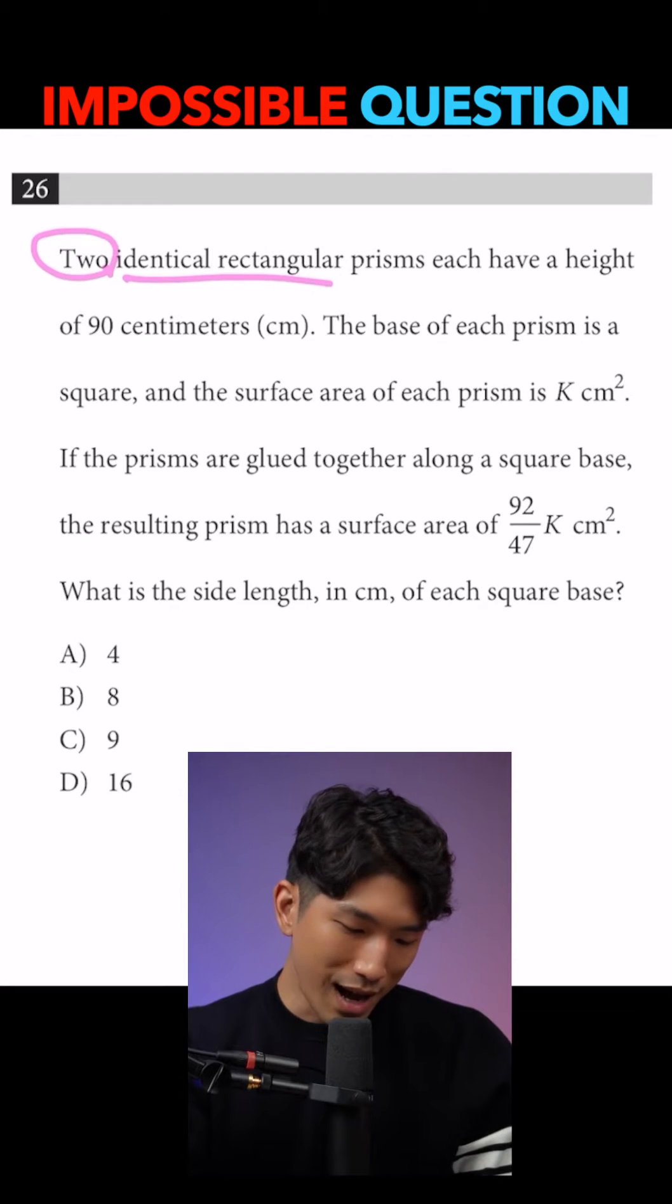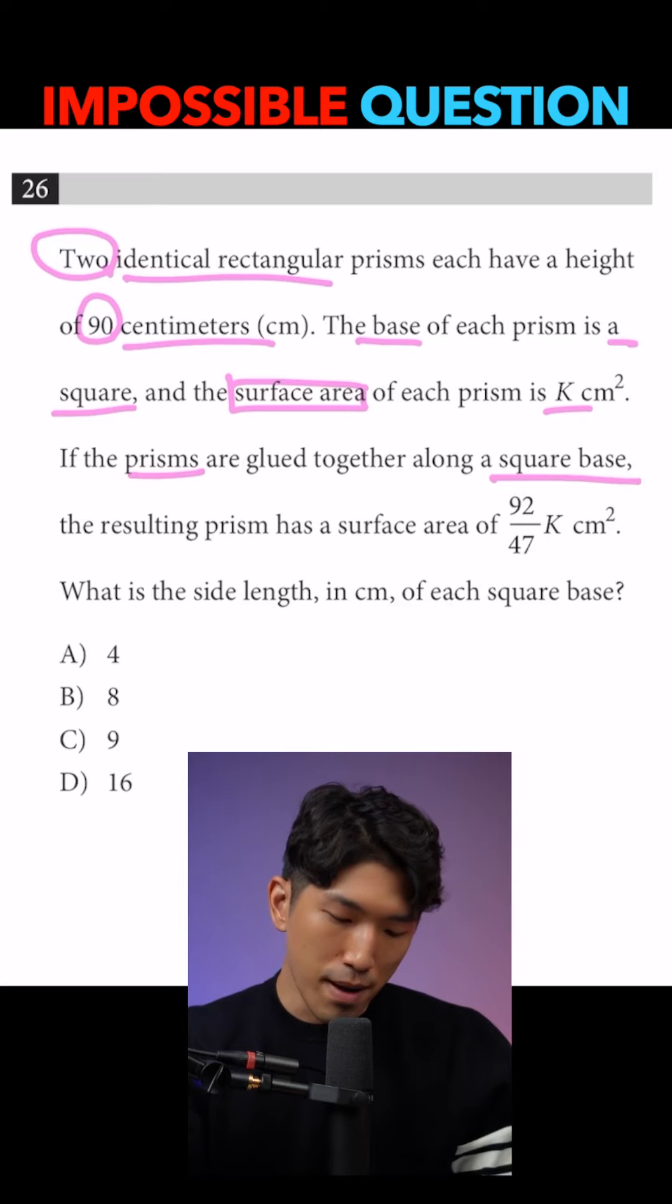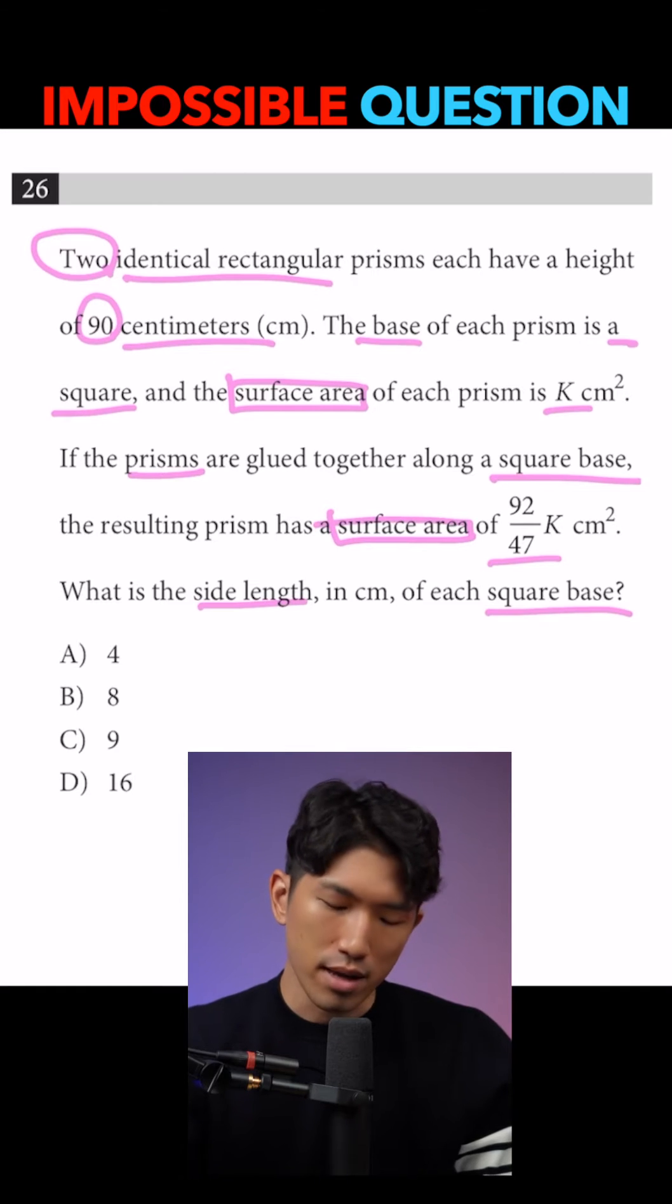Two identical rectangular prisms have a height of 90 centimeters each. The base of each prism is a square, and the surface area of each prism is k centimeter squared. If the prisms are glued together along the square base, the resulting prism has a surface area of that much right there. What's the side length in centimeter of each square base?